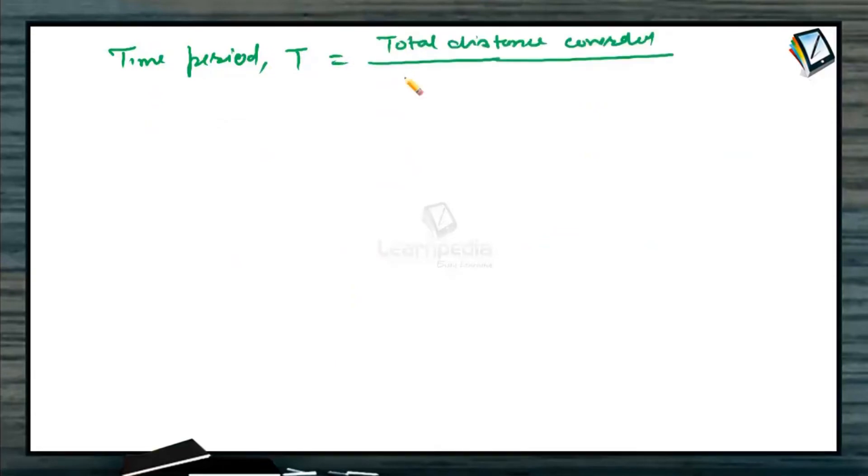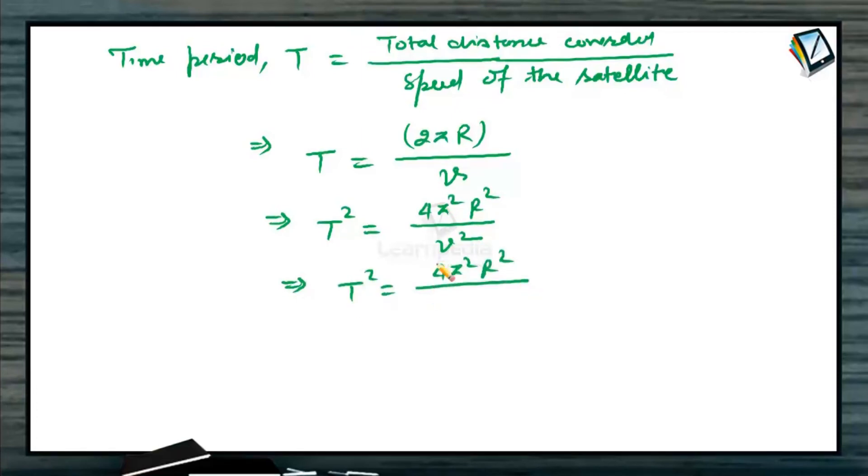So, this implies that T equals the total distance covered, that is 2πR, the total circumference, upon speed of the satellite, that is v. This implies that T² equals 4π²R²/v², or this can be further written as T² equals 4π²R² upon the value of v², which is just calculated above to be GM/R, or it can be written further as 4π²R³/GM.